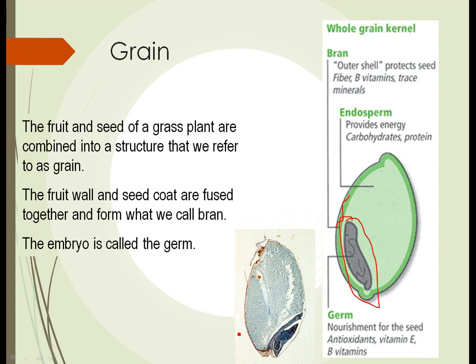When you eat bran or bran flakes, it's this outer part of the plant. The rest of the interior is a large area made up of something called endosperm. The endosperm provides energy for the embryo to grow once the grass seed starts to germinate, but before the embryo is capable of doing photosynthesis on its own. It needs some source of energy to get to a point where it can do photosynthesis — the endosperm provides that.